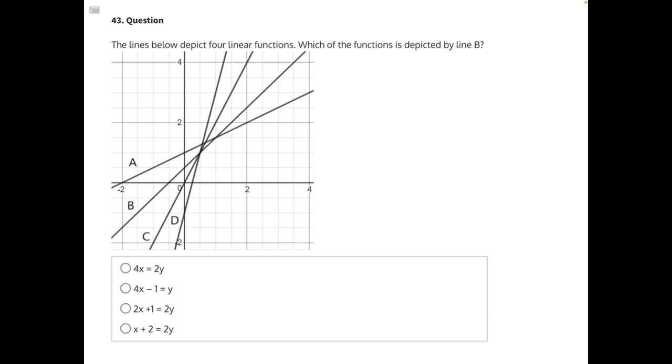The lines below depict four linear functions. Which of the functions is depicted by line B? Line B is this line right here, and it is passing through.